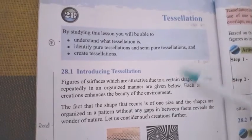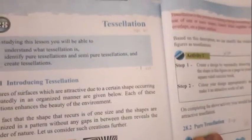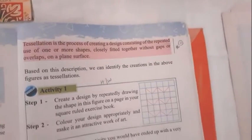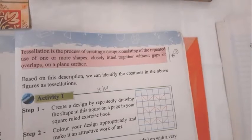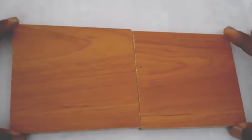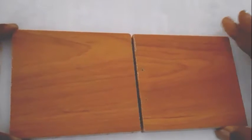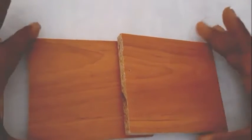You have to read the information on page 148. Tessellation is the process of creating a design consisting of the repeated use of one or more shapes closely fitted together without gaps or overlaps on a plain surface. Now I have taken two tiles. If I keep them without gaps and without overlaps, this is the way you can identify Tessellation.